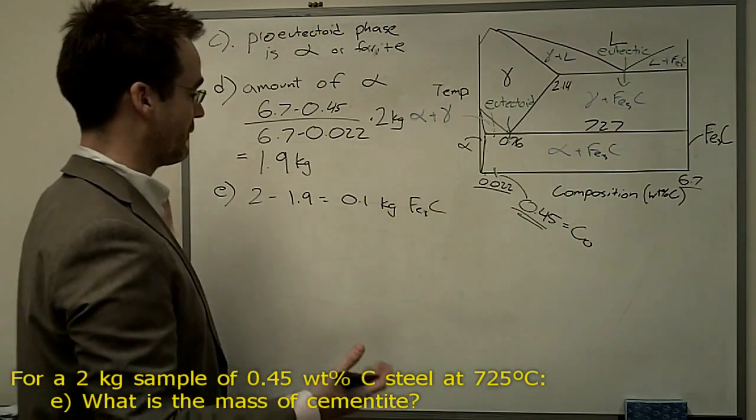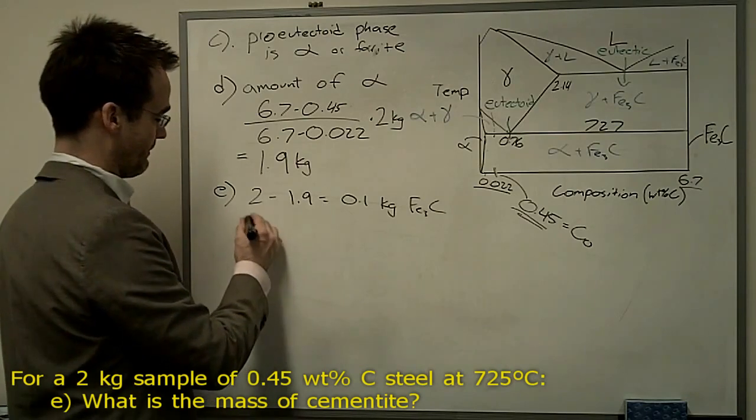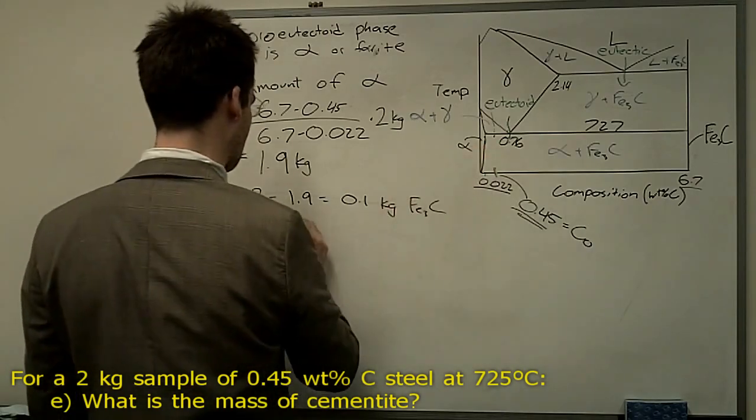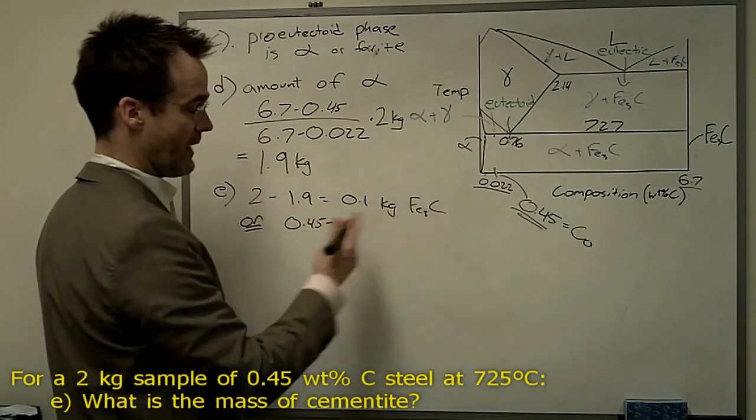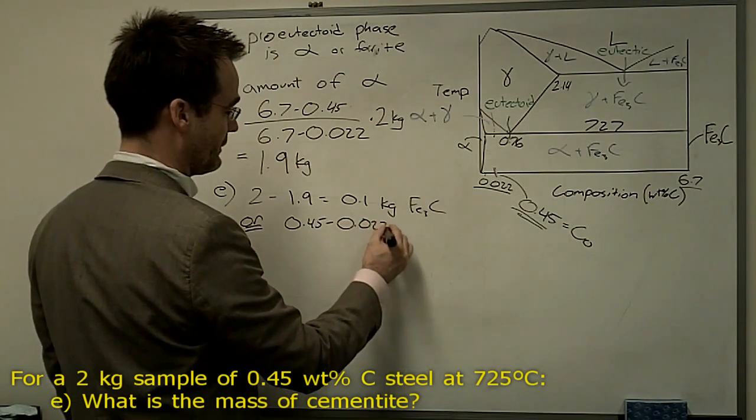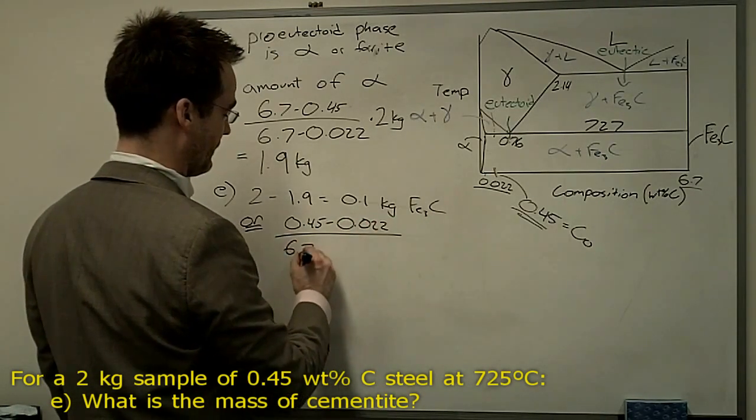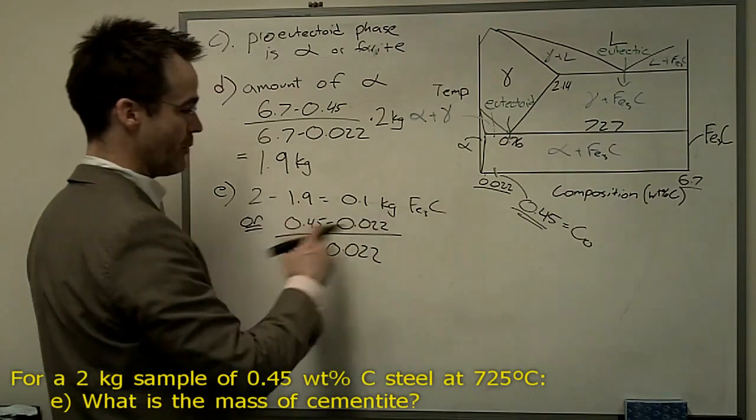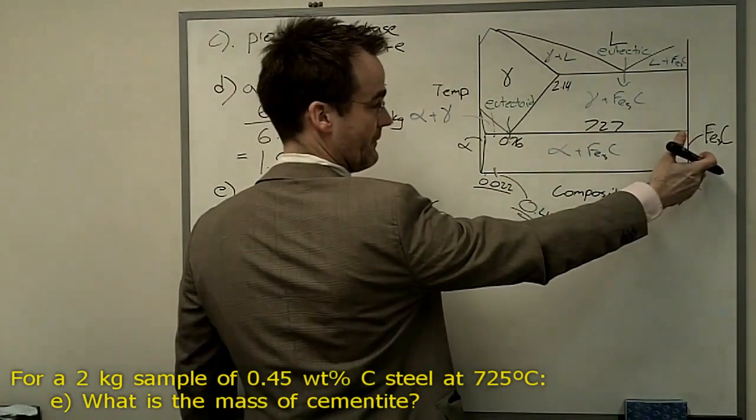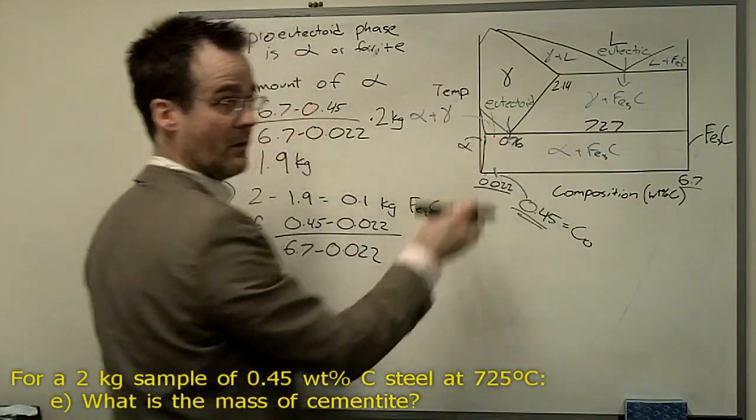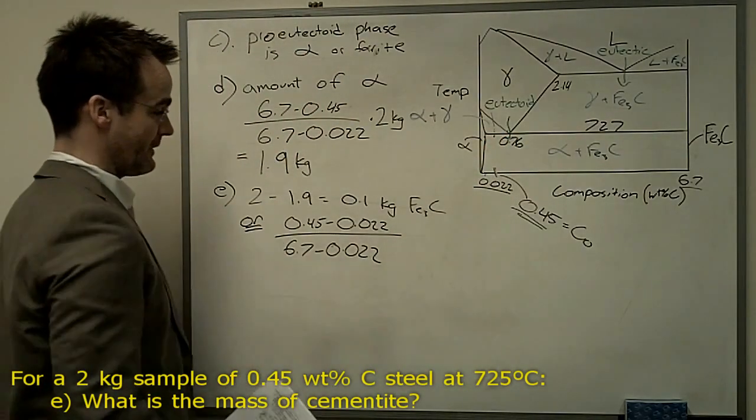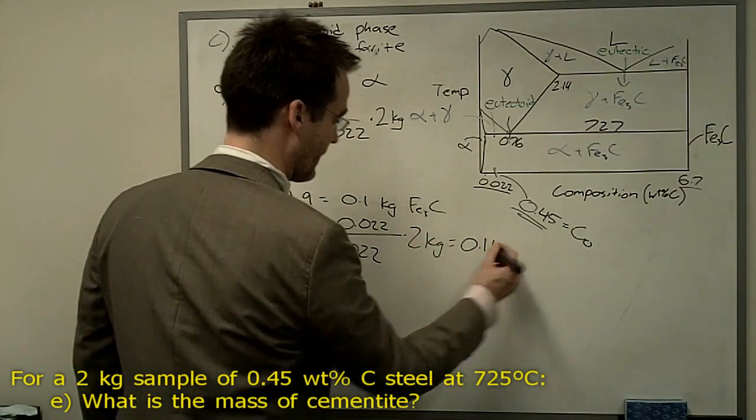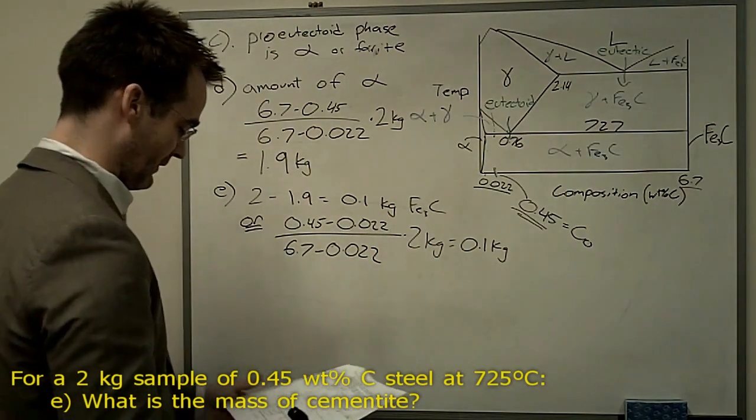Just for the sake of being complete, you could also go like this, or you could do the opposite side of the lever, which would be 0.45 minus 0.022 divided by 6.7. Again, the same length of the tie line as before. We've just got in the numerator the opposite side. We're calculating the cementite, so we're taking the other side, the small little side of the lever. And that's going to give us the same thing. Times 2 kilograms is going to be equal to 0.1 kilograms. Either one gives us the same, either approach gives us the same value.